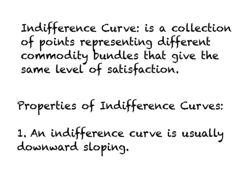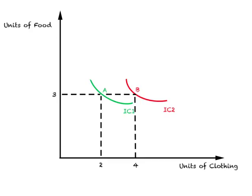Here is a formal definition: an indifference curve is a collection of points representing different commodity bundles that give the same level of satisfaction to a consumer. Based on this diagram, we can state the first property of indifference curves: an indifference curve is usually downward sloping, which simply means you will have to give up something in order to gain something.